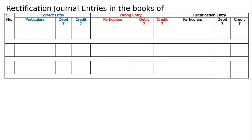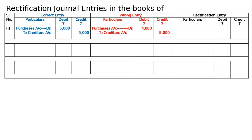Purchase book has been undercast by 1000. The correct entry is Purchase account debited to creditors account. Take any amount above 1000, say 5000. The mistake was Purchase book was undercast by 5000 — Purchase account debited to creditors account. In Purchase account, write down 1000 less, that is 4000.